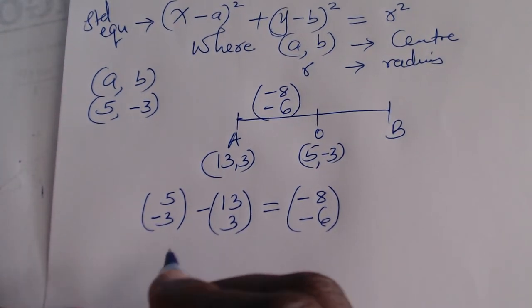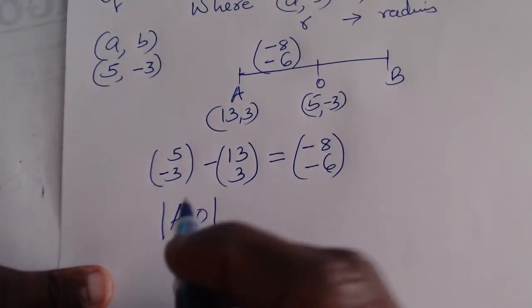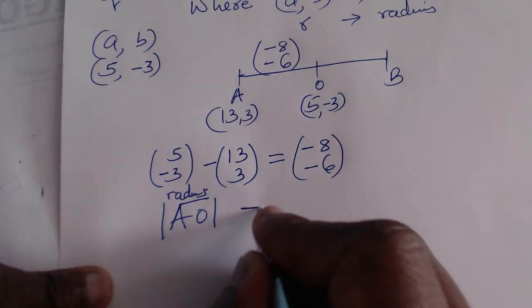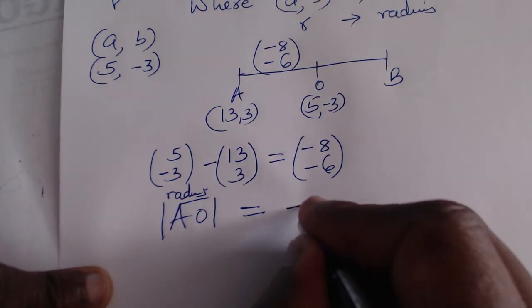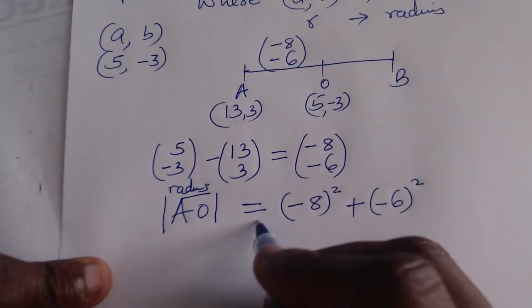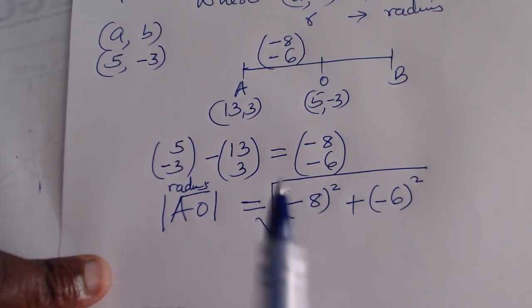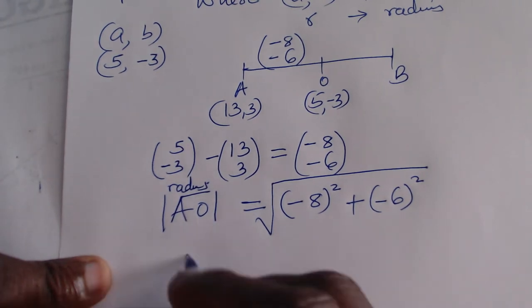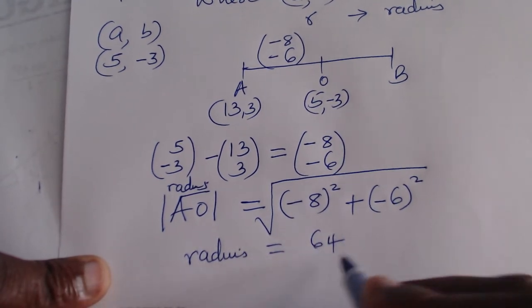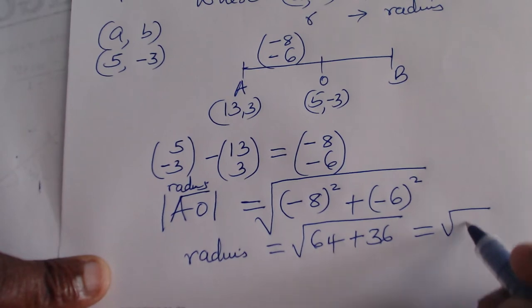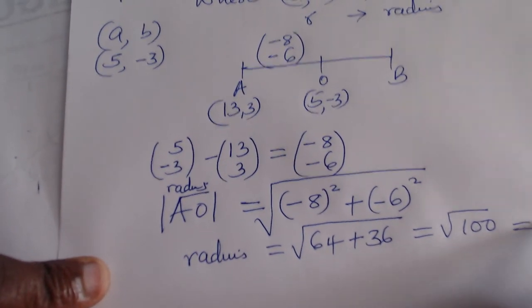Now we get the magnitude of AO, which gives the radius. We compute: √((−8)² + (−6)²) = √(64 + 36) = √100 = 10 units. So the radius is 10 units.